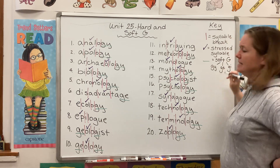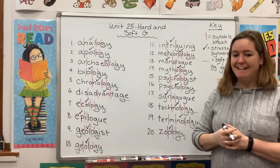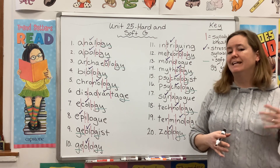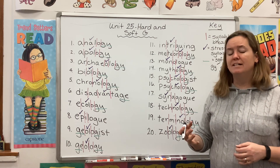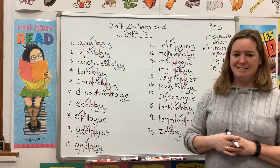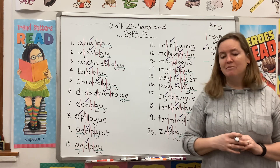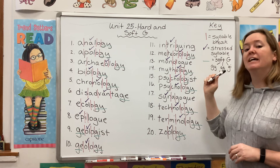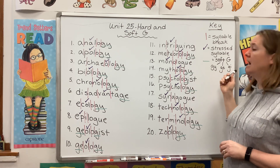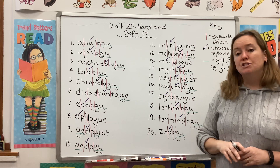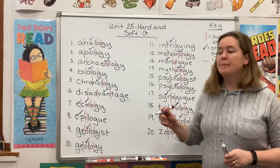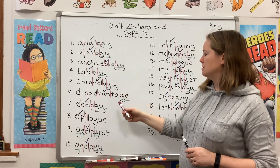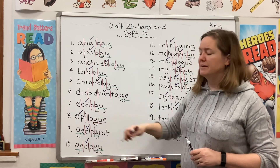You will never see soft G alone at the end of a word. It will have to have a babysitter letter. So even if you're trying to write a word like cage or huge or fudge, you'll have that E there to babysit it. Hopefully this is something you learned back in second or third grade — that soft G is always followed by the letters E, I, or Y. Now let's look for some hard G's. Choose a second color. Epilogue — there's a hard G, followed by U.